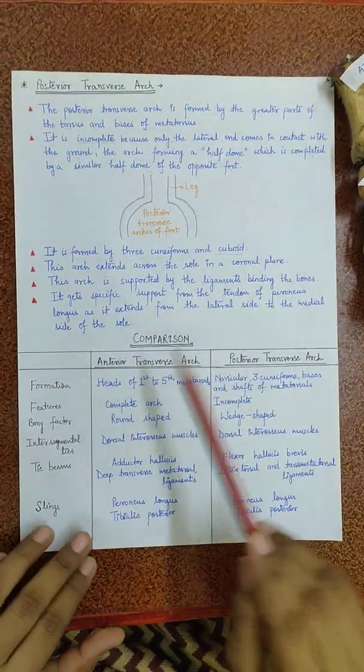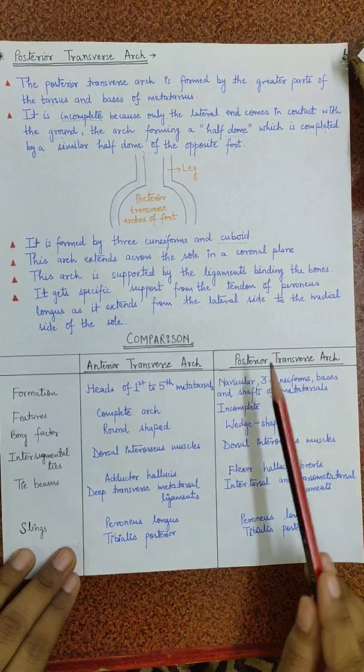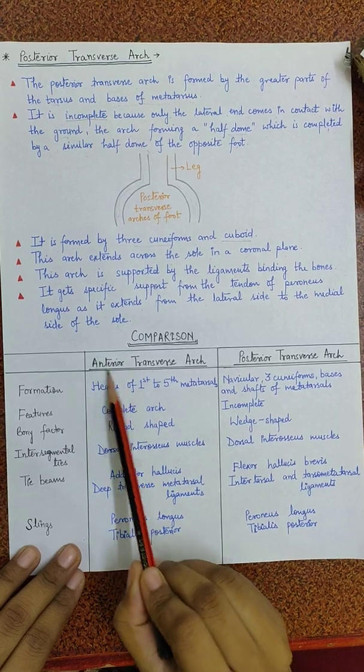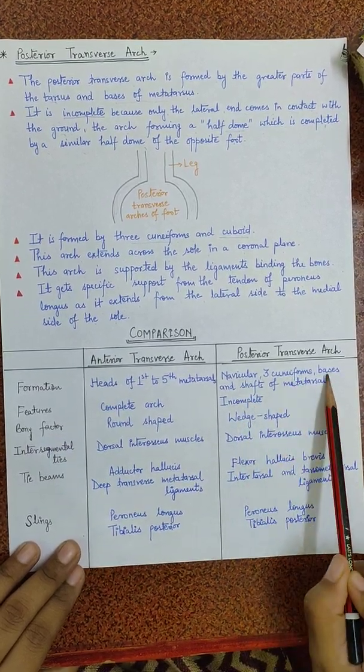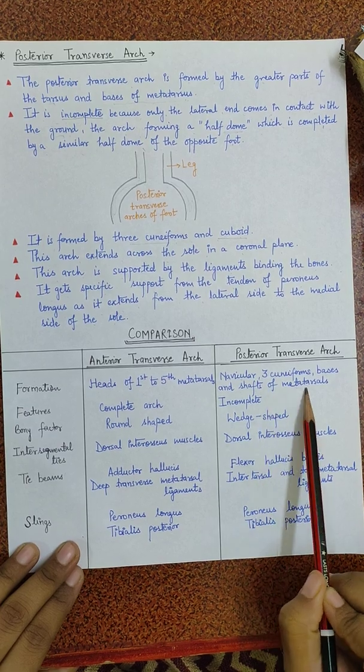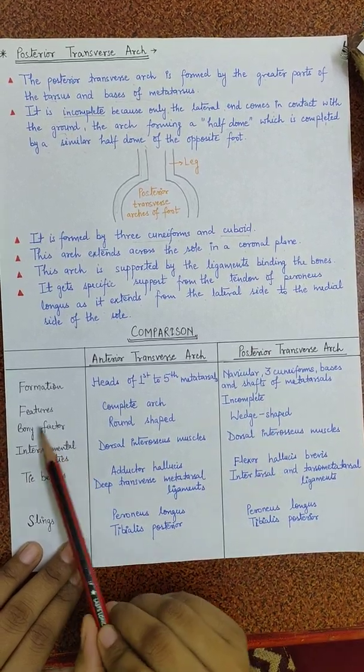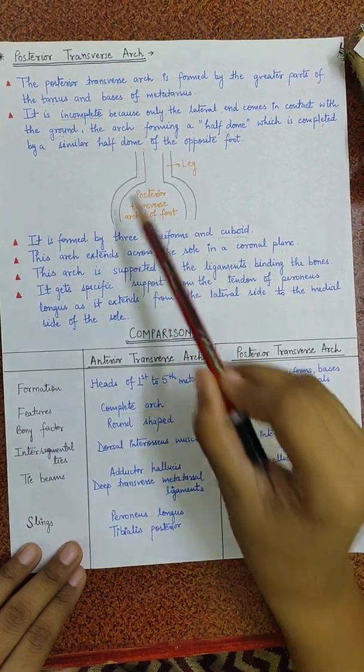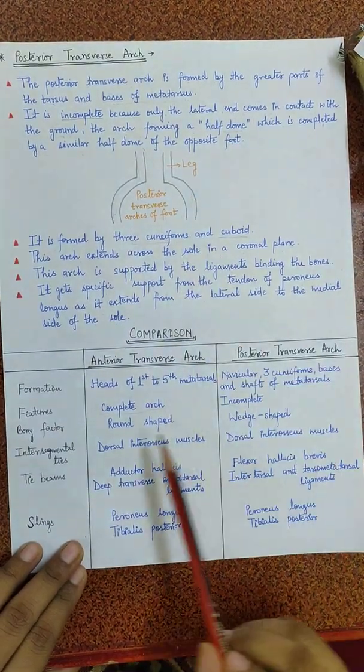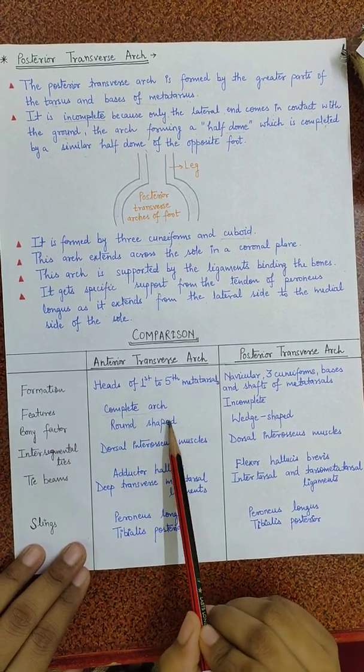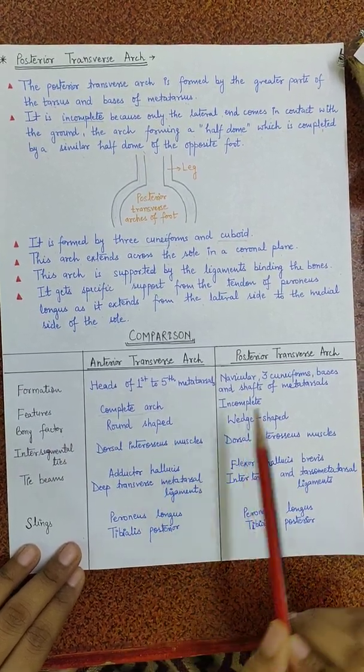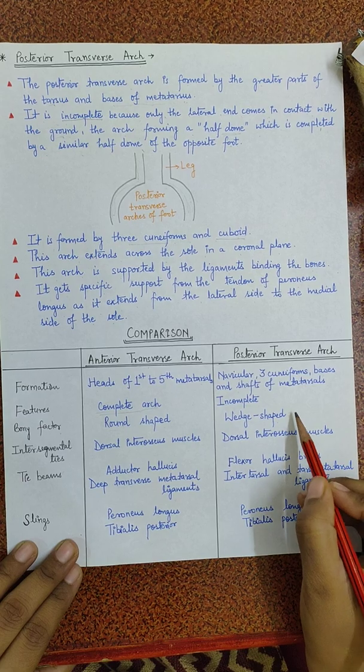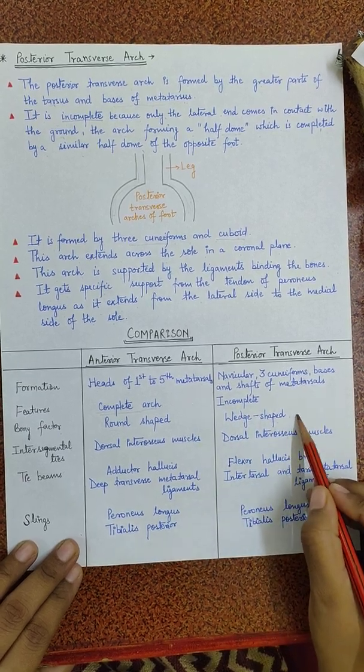Now we will compare the anterior and the posterior transverse arches. Formation: the heads of first to fifth metatarsal is forming the anterior transverse arch while the navicular, three cuneiform bones, the bases and shafts of metatarsals form the posterior transverse arch. Features: this is a complete arch while this is an incomplete arch and the half dome concept we can see here. Bony factor: the anterior transverse arch is round shaped while the posterior transverse arch is wedge shaped and actually the shape of the metatarsals help in supporting this arch.